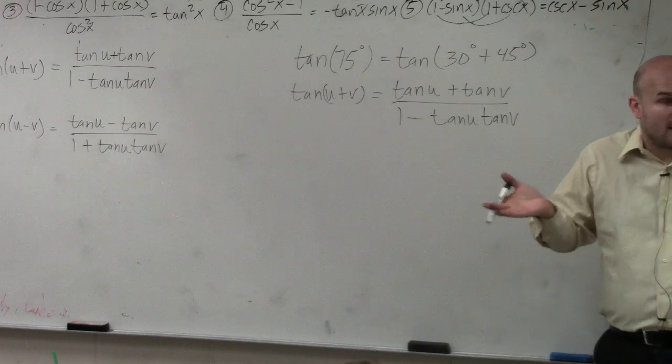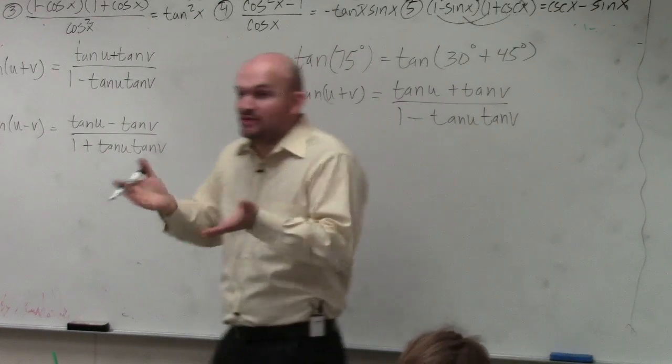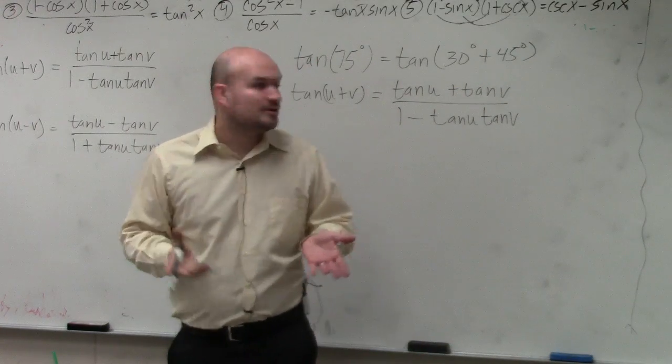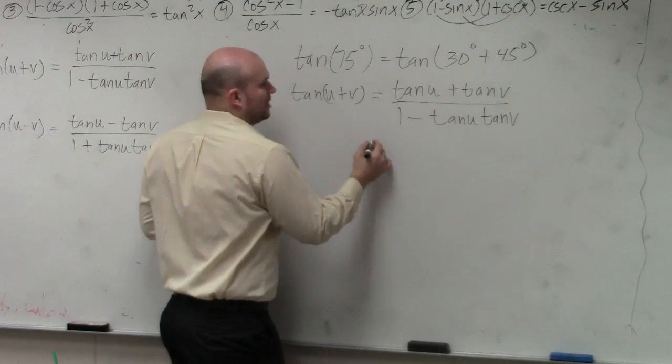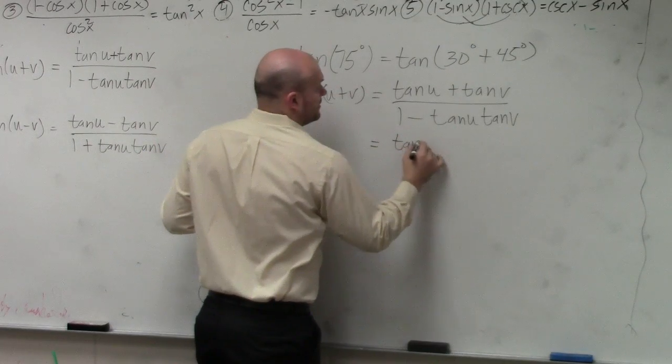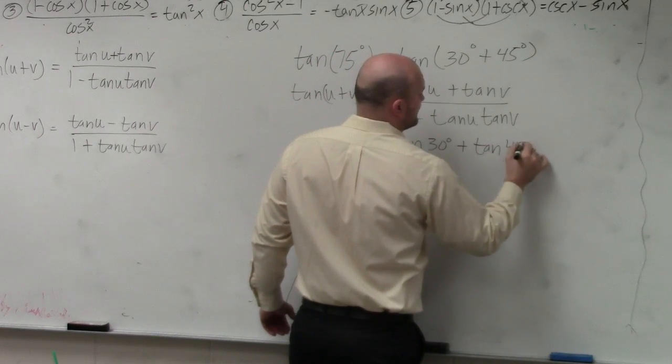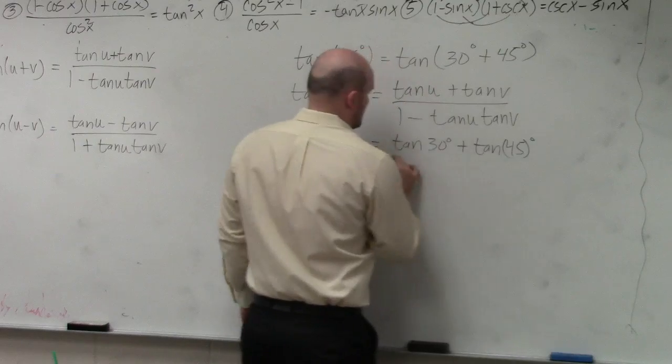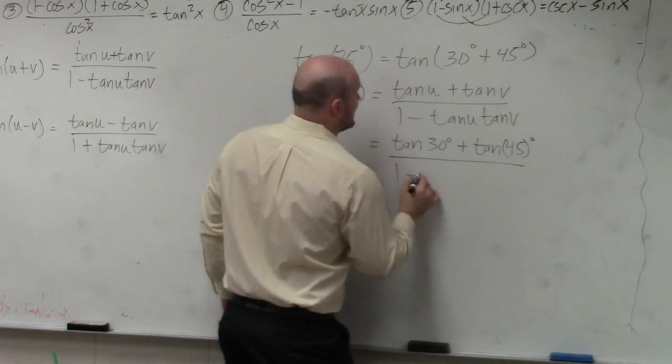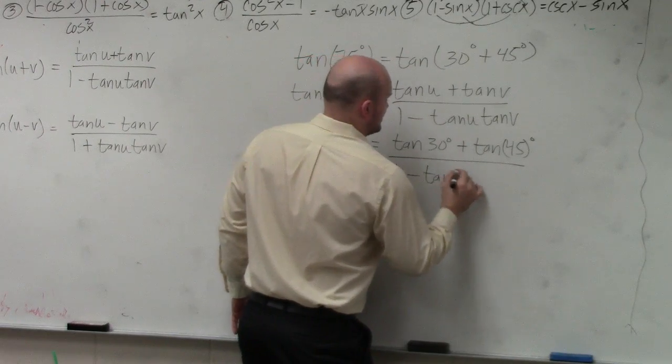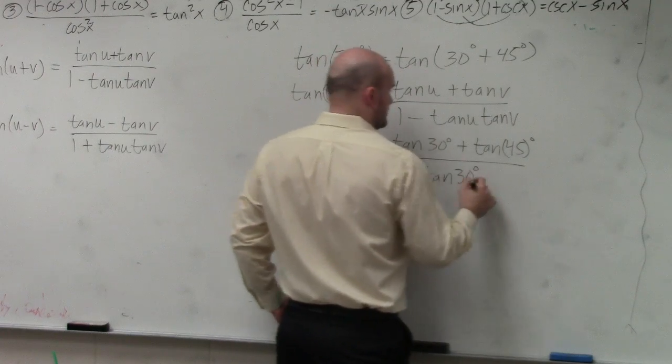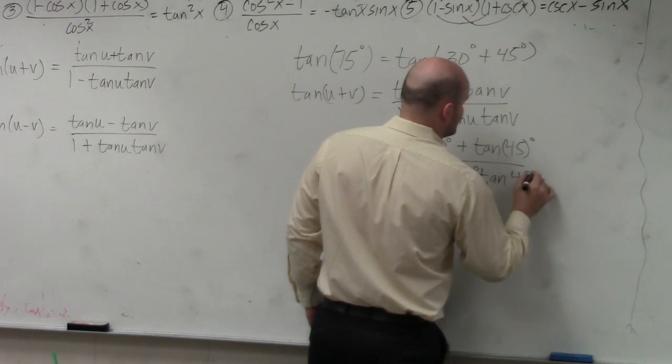Does everybody agree with me? Now all we do is replace u with u and v with v. Does that make sense, Mason? Good. So all I'm going to do is tangent of 30 degrees plus the tangent of 45 degrees, all over 1 minus the tangent of 30 degrees times the tangent of 45 degrees.